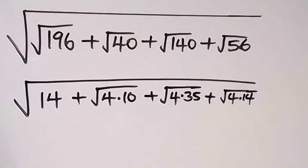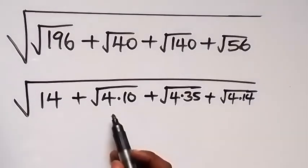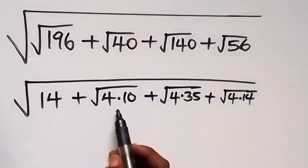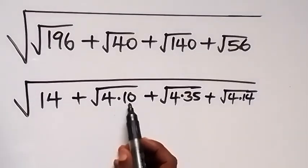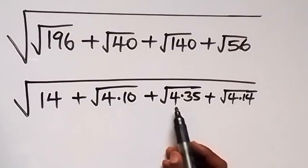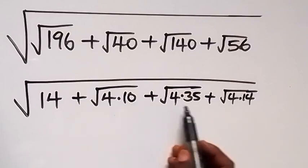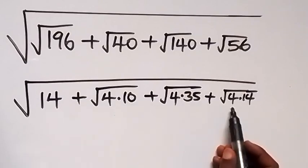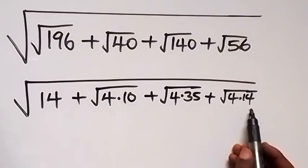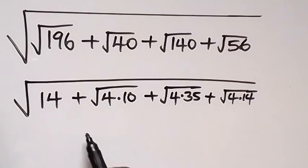Then this can also be separated: root 4 times root 10, also root 4 times root 35, also root 4 times root 14. And root 4 is 2.